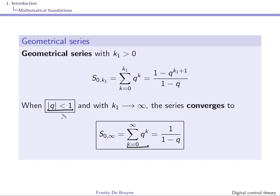You can see that this is true, because when the modulus of q is smaller than 1, taking the power k as k goes to infinity will produce numbers that become smaller and smaller. This is why this sum is converging. When q in modulus is larger than 1, it's obvious that we'll have a sum of growing numbers, so this will not converge.